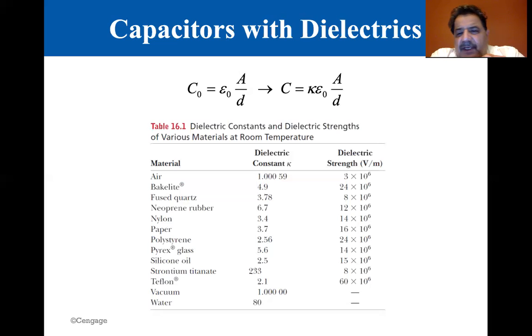So you can see that in air, it's three times 10 to the sixth, Bakelite is 24 times 10 to the sixth. They're all in the range of 10 to the sixth. The highest looks like Teflon, 60 times 10 to the sixth, and the lowest looks like air, which is three times 10 to the sixth. Probably next would be the strontium titanate and the fused quartz. So there's a table of dielectric constants, the kappas and also the dielectric strength, volts per meter.